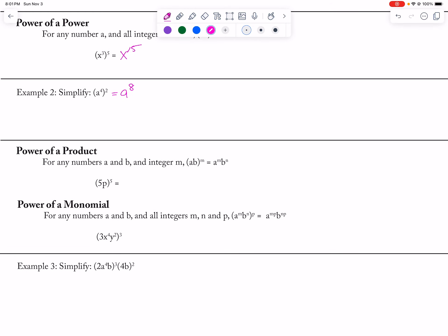If I have exponents, I can distribute them, so this would be 5 to the 5th power and p to the 5th power, which would be 3125 p to the 5th.